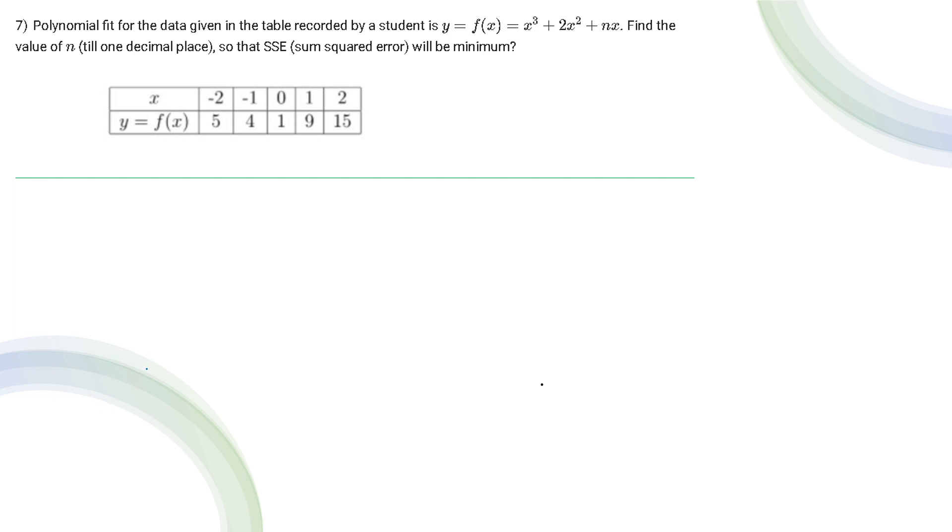Question 7 says: polynomial fit for the data given in the table recorded by a student is f(x) = x³ + x² + 3x² + nx. Find the value of n so that SSE will be the minimum.